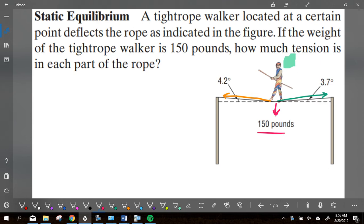Gravity is the third force right here that makes 150 pounds. So it says a tightrope walker is located at a certain point, deflects the rope as indicated in the figure. 150 pounds, how much is the tension on the ropes? And so what we're going to do is we're going to write each force. So again, I'm going to call this force A. I'm calling this force B. And you can call this gravity. I'm going to call it force C.